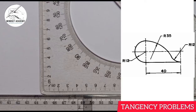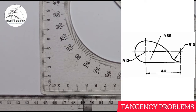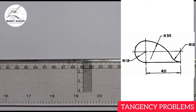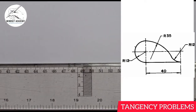Now like I always tell you, locate a center that you know is really a center. Like I'm using this point here. How would I get that? I'm going to draw my horizontal line this way using my center line to denote that.